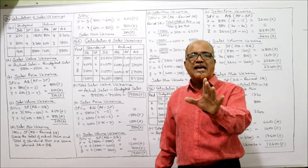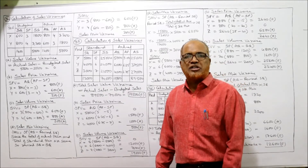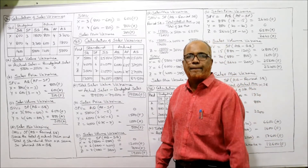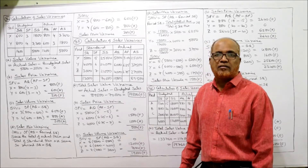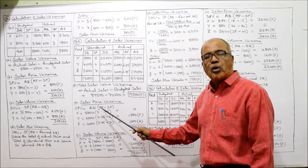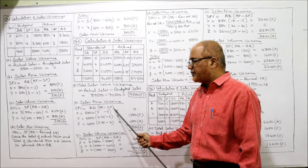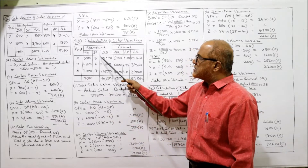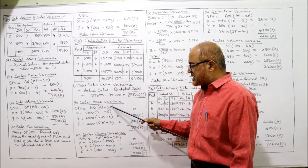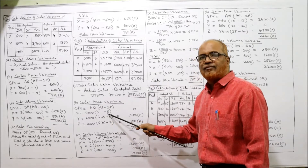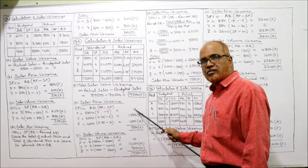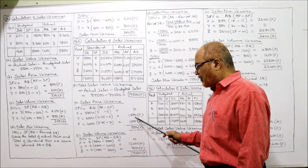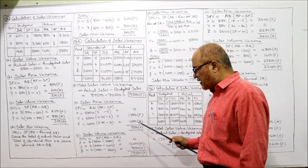Now substituting values in the formula. Sales value variance equals actual sales minus budgeted sales: 89,500 minus 70,000 equals 19,500 favorable — that is the total sales value variance. Sales price variance equals actual quantity into (actual price minus standard price). For X: 5 minus 5 into 5,000 equals 0 — no variance. For Y: 6.25 minus 6 into 6,000 equals 1,500 favorable. For Z: 6.75 minus 7 into 4,000 equals 1,000 adverse. Set off: 1,500 favorable minus 1,000 adverse equals 500 favorable as the sales price variance.